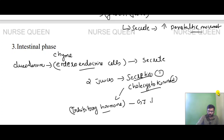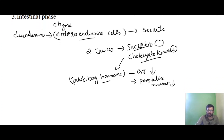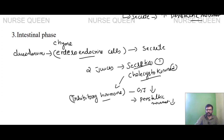Gastric juice secretion also relates to peristaltic movement. The first phase involves water absorption and nutrients, vitamin absorption, and entry into the bloodstream with calories and nutrients.